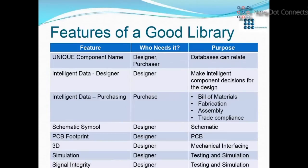Why is a unique component name important? Because if there are two different databases — usually a PLM system the purchasers are using and the engineering library you're using — the only way they'll talk to each other is if they share a unique component name. By having that, Altium can actually relate one database to another. So these are the features of a good library: it's beyond just symbols, footprints, and 3D — yes, you need them, but the intelligent data area is really critical.